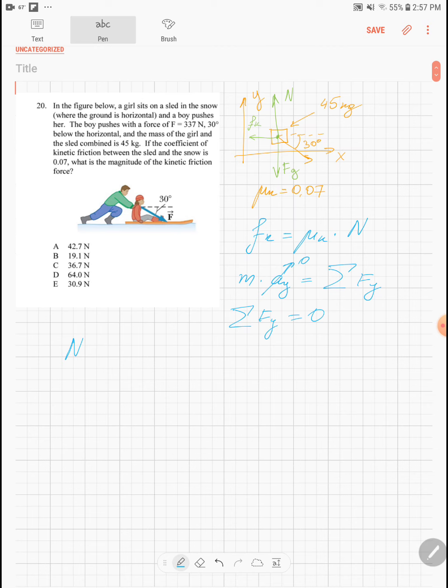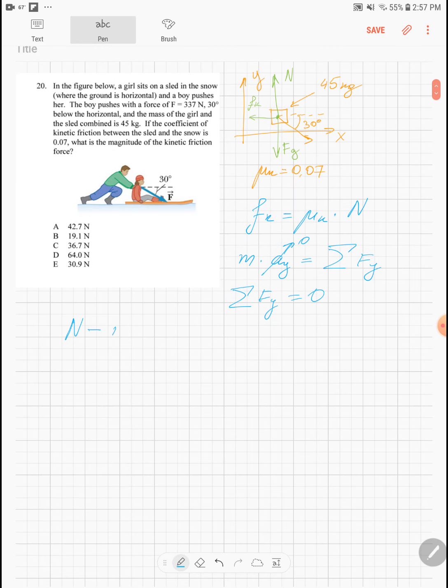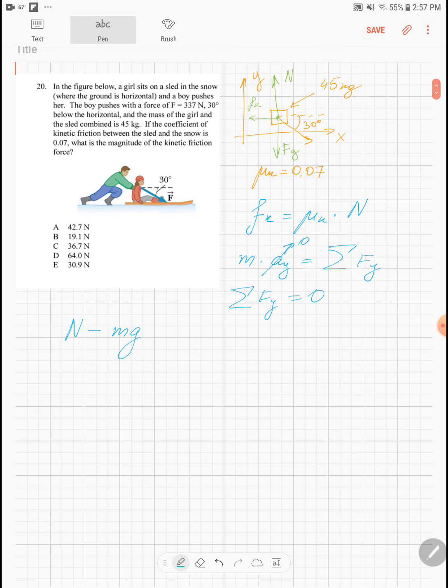So there is a positive contribution from the normal force, there is negative contribution from the force of gravity so minus m times g, and there is also negative contribution from the force of the push. So we need to find the y component of the force of the push. So it is as I said negative, its magnitude is the force of the push times, we are looking for the y component so this part is opposite to this angle of 30 degrees, so this is why we have to use the sine of 30 degrees.